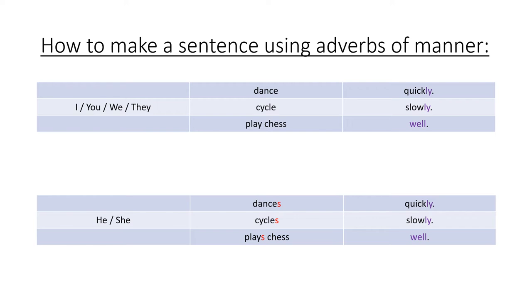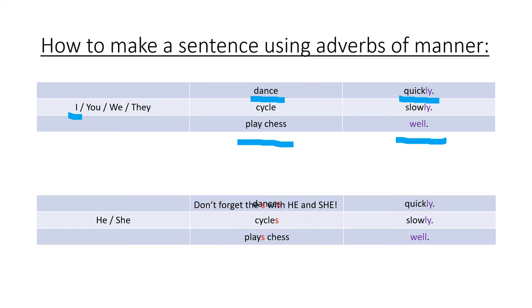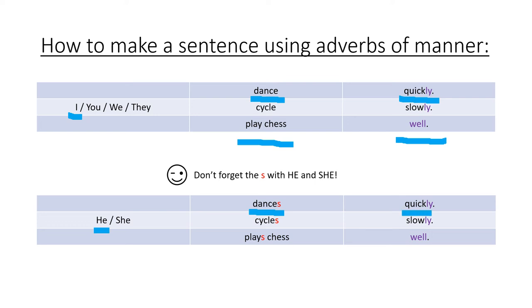How can we make a sentence using adverbs of manner? Well, for example, we start with I, you, we, or they, then we have our verb, and then finally the adverb of manner. For example, I dance quickly. Don't forget — with he and she, we have to add the S. So, he dances quickly, or she cycles slowly.